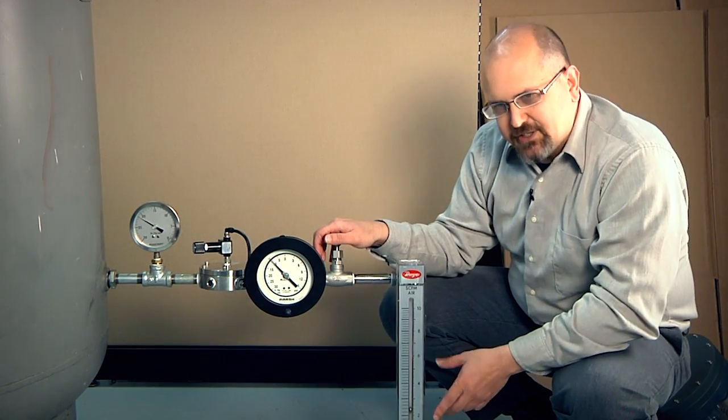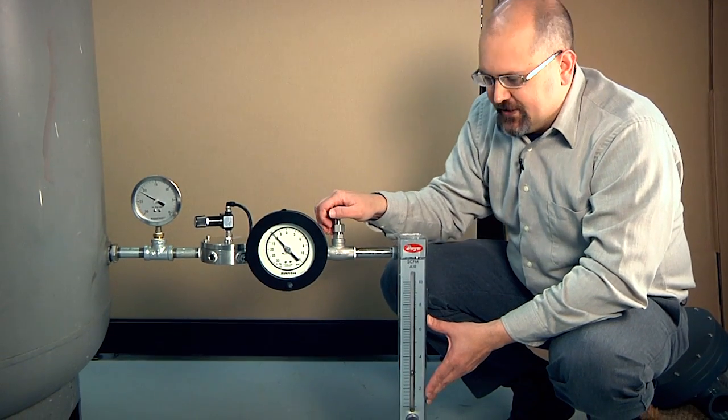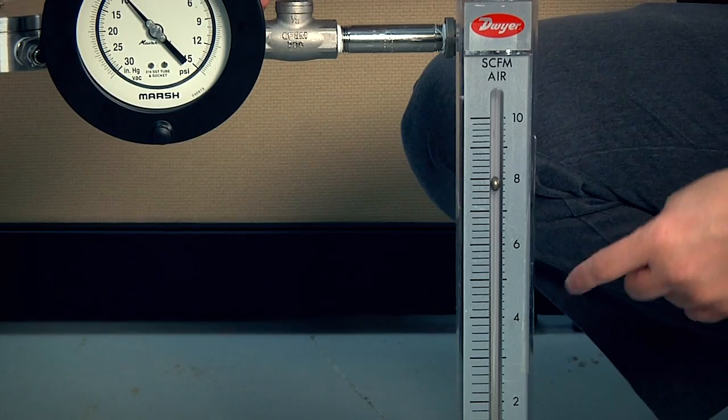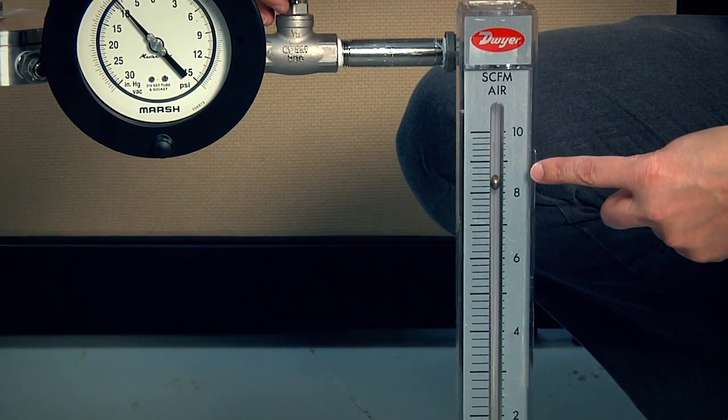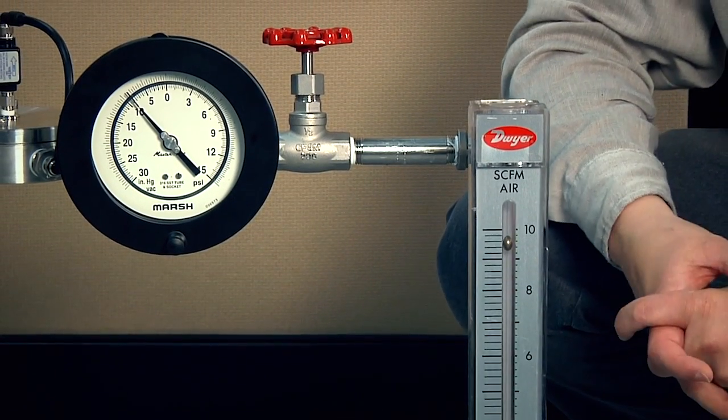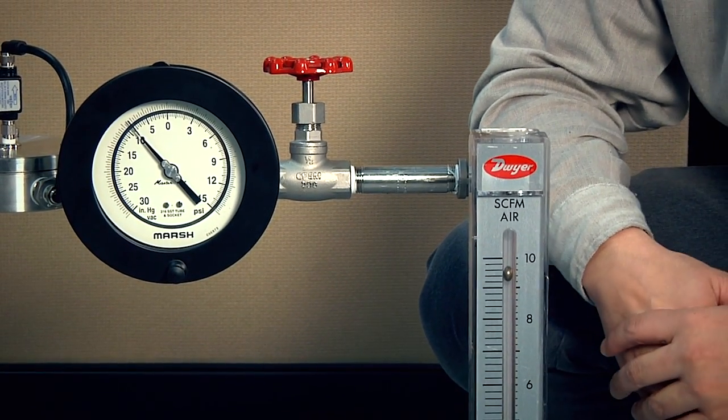Now what I'm going to do is show if there was variation in the system. I'm going to do that by turning this ball valve open. And you can see we've brought the flow all the way up to about 10 SCFM. Five times more flow than we started with.